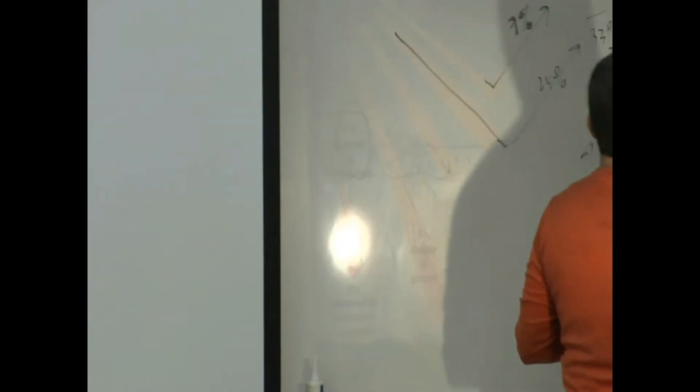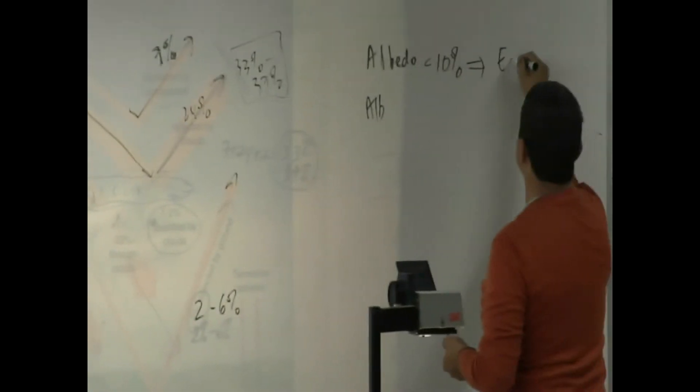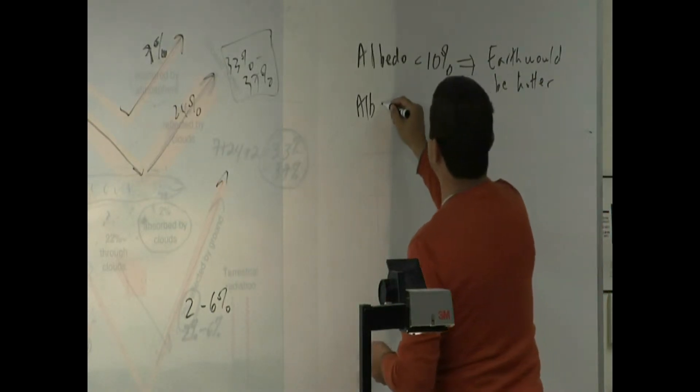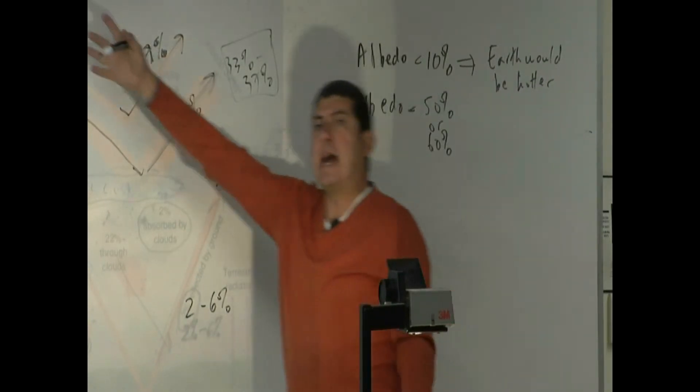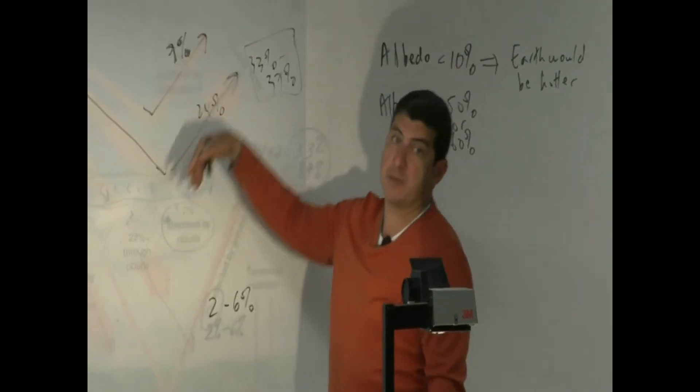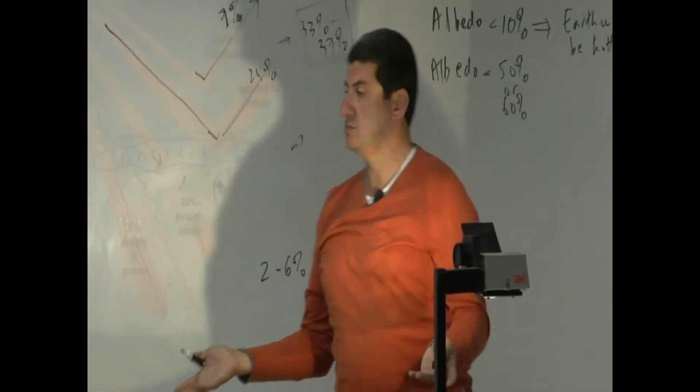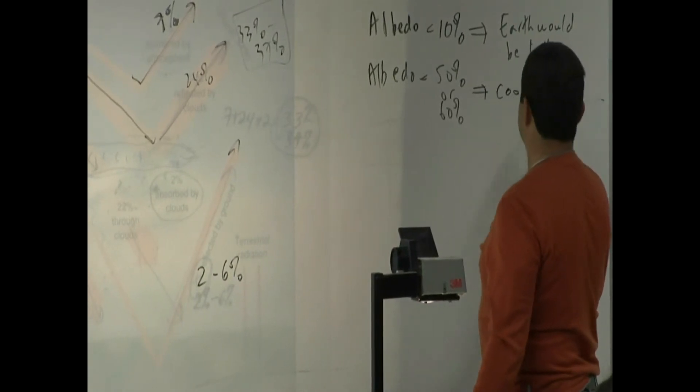And if the albedo had been, so we said this one, the earth would be hotter. What if the albedo had been 50% or 60%? That means half of the energy coming to the earth would be sent back or 60% would be sent back. Then, of course, it would be cooler. The earth would be cooler.